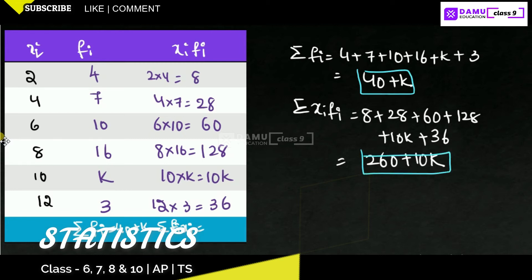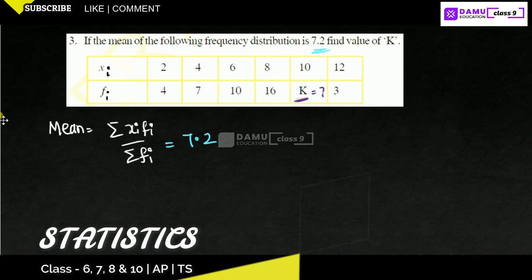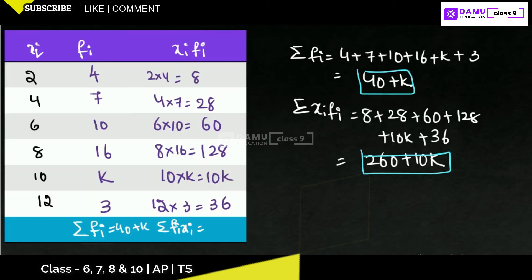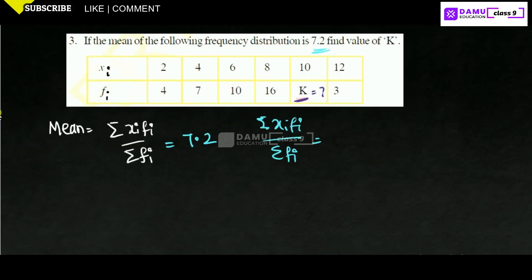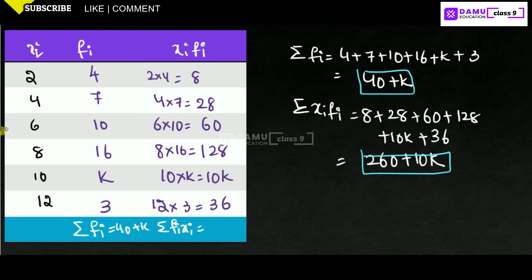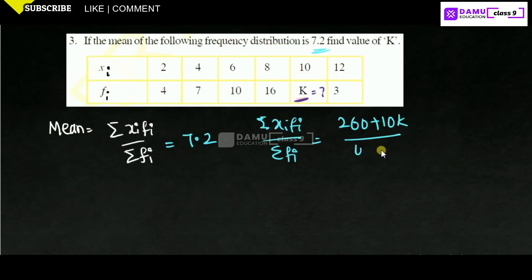We are finding 40 plus k and 260 plus 10k. These are the values. Now we are going to substitute here. Summation of xi fi by summation of fi, that will be equal to 260 plus 10k whole divided by 40 plus k. That will be equal to 7.2.